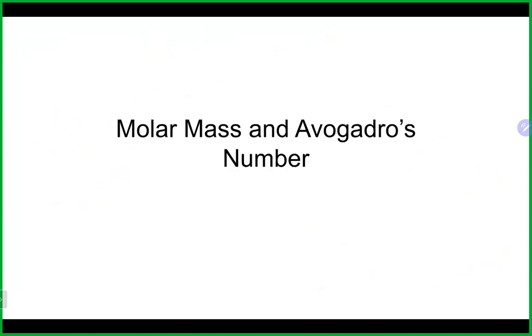Now we're going to switch gears and talk about some important calculations, including molar mass and Avogadro's number. Molar mass has units of grams per mole. Avogadro's number is a number used in chemistry — you can think of both of these as conversion factors that allow us to do certain types of conversions, like going from grams to moles or to atoms.